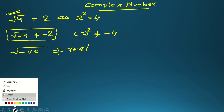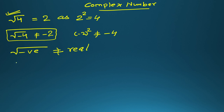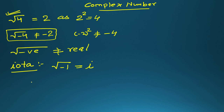Now, we are going to introduce another word: iota. What is the meaning of iota? It is just a notation for the square root of a negative number. Square root of minus 1 is called iota and we write it by the small letter i. So i is equal to square root of minus 1. If i equals square root of minus 1, then i squared equals minus 1.